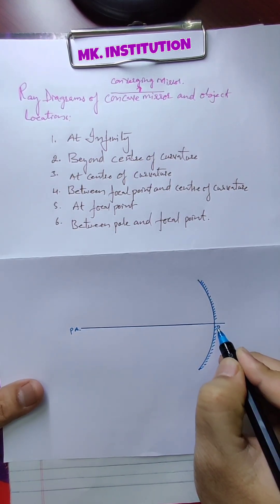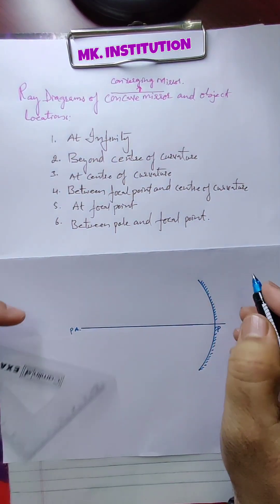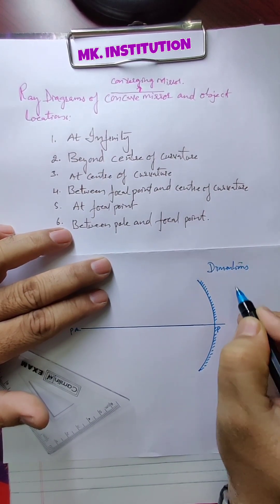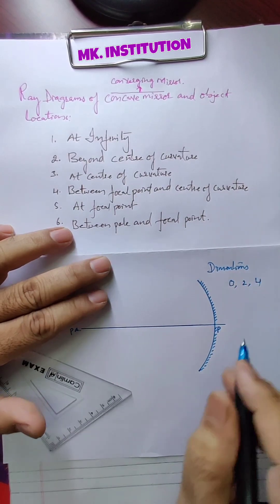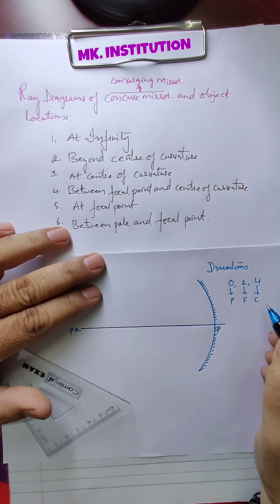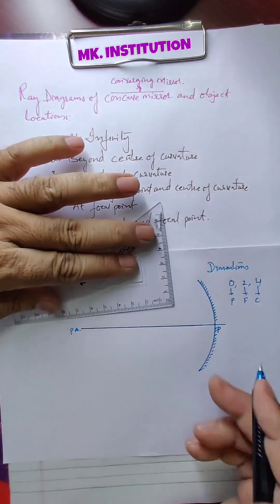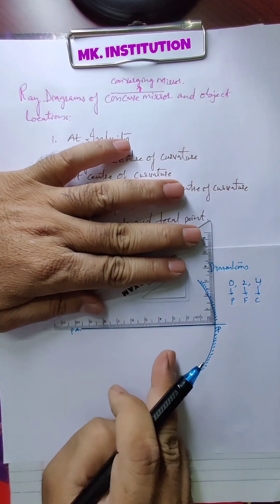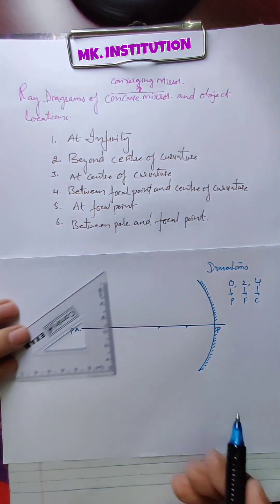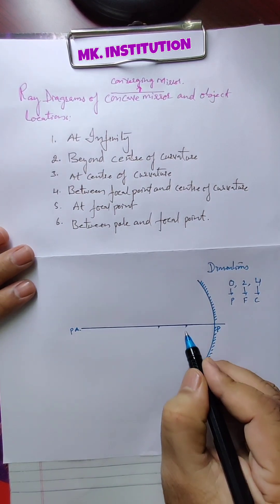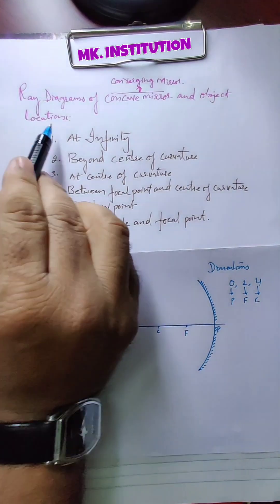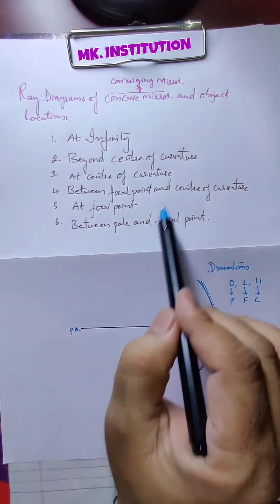This is the pole. Take the city square and dimensions — already you know how to write the dimensions. Dimensions are 0, 2, 4. So what is 0? Pole. What is 2? Focal point. What is 4? Center of curvature. So this we have to show — pole, this is the pole, and from the pole, mark it from 0 to 2, then 2 to 4. Write F for focal point and center of curvature. These are the situations — object locations, these are all the object locations.